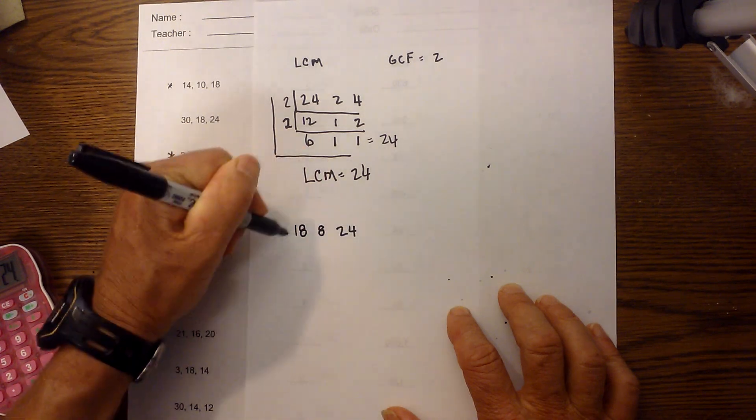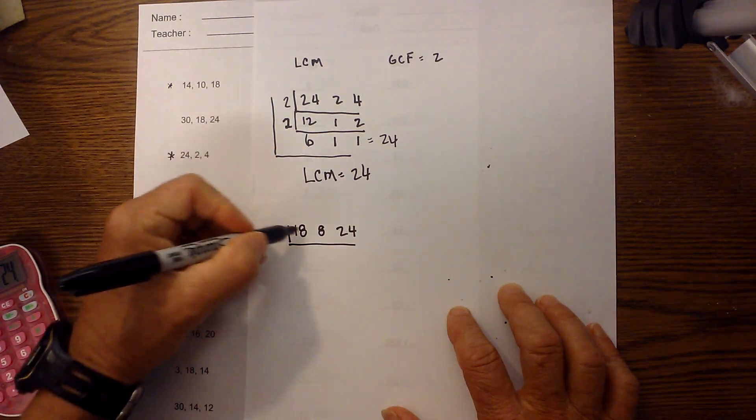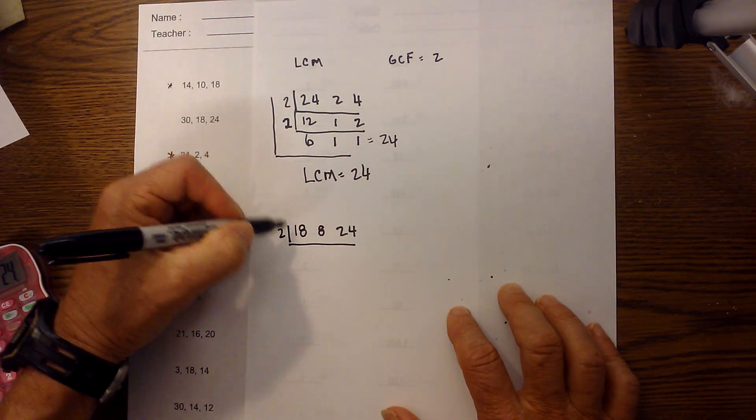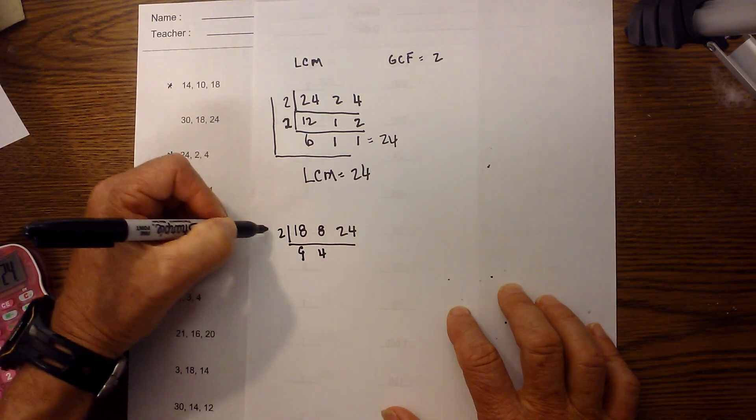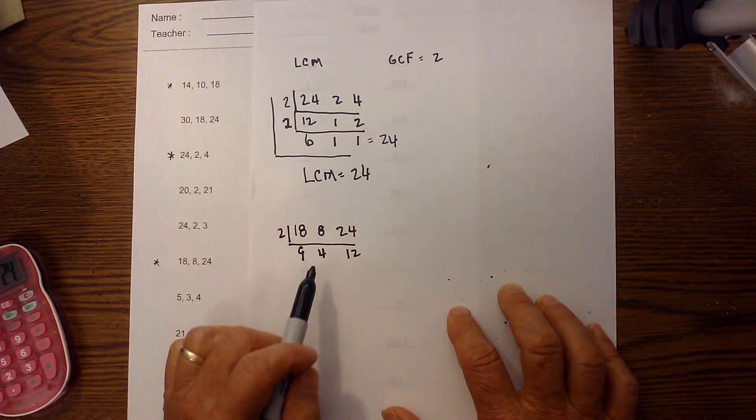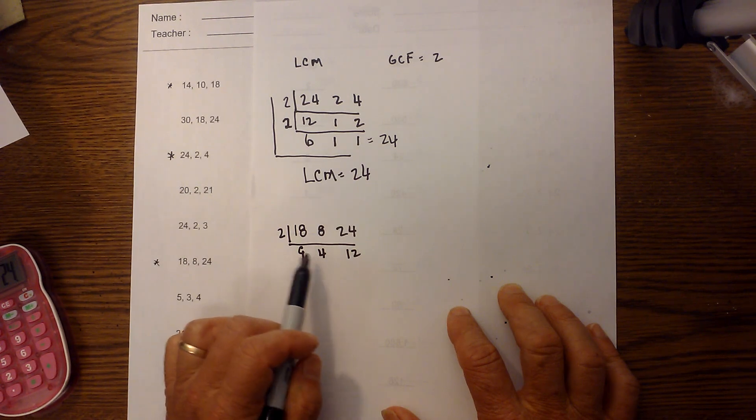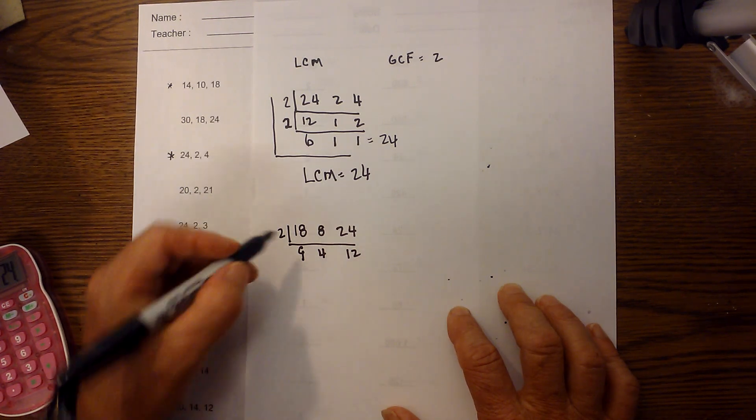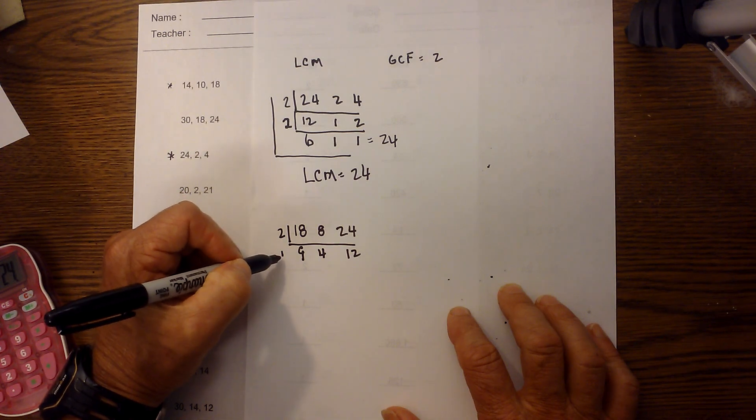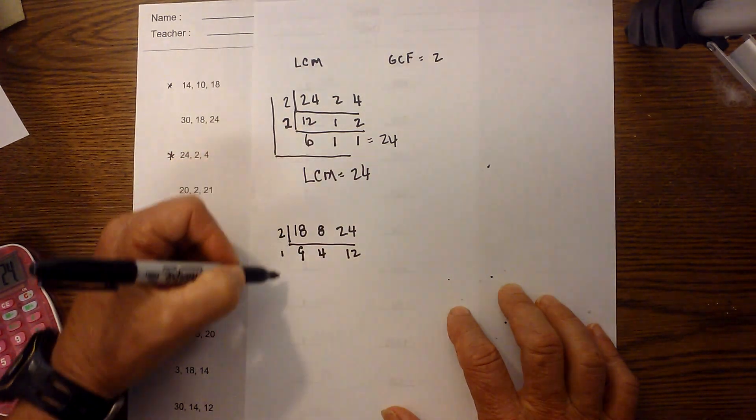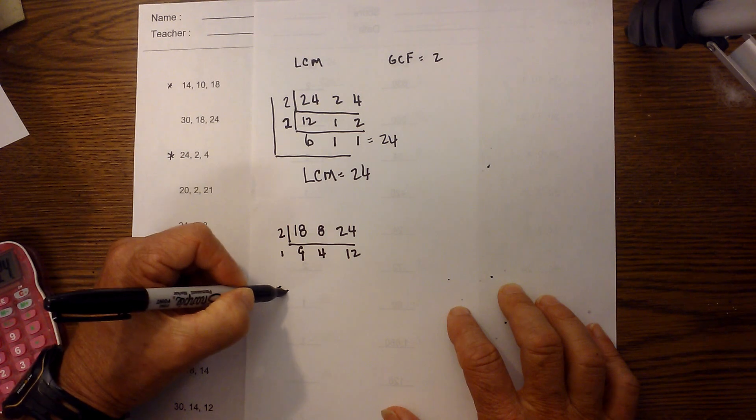Let's work another example. We have 18, 8, and 24. I'm going to first find the GCF. 2 will go into that. 2 goes into 18 nine times, it goes into 8 four times, and 24 twelve times. At this time I do not have a number that will divide into all three evenly, so it's 1. I multiply straight down: 2 times 1 is 2, so the GCF is equal to 2.